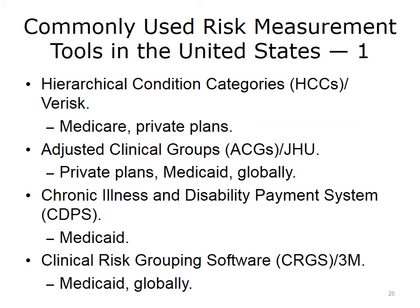Another widely used methodology developed at the Johns Hopkins University is officially called Adjusted Clinical Groups, or ACGs. They were originally called Ambulatory Care Groups because they were meant as an adjunct to the Inpatient Diagnosis Related Group, or DRG, system. These are widely used by many Medicaid programs and for financial application, by many private health plans and government agencies for care management, and in addition to the U.S., they are used in about 20 other nations. Chronic Illness and Disability Payment System, CDPS, is a methodology originally developed for Medicaid programs. Clinical Risk Grouping Software, CRGS, is a methodology developed by the 3M Corporation, used in various Medicaid programs and private organizations in the U.S. and globally.